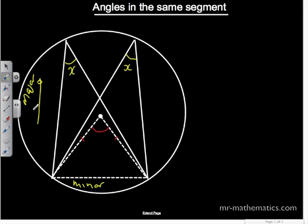the angle at the center would be 2x, and that would be true for both angles at the circumference. Therefore, the angles at the circumference must be equal.